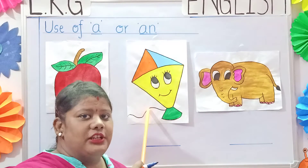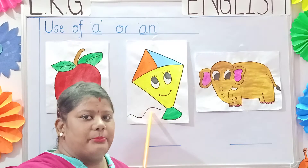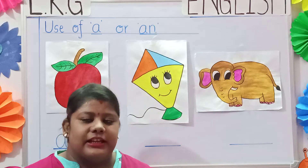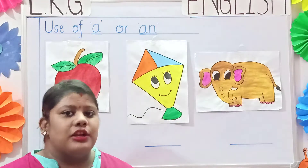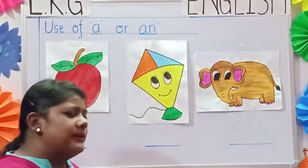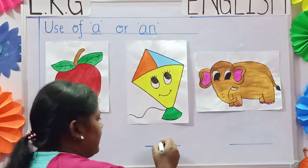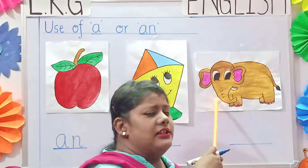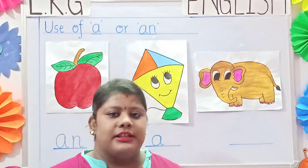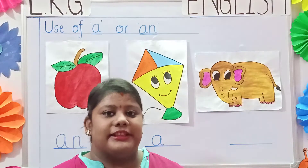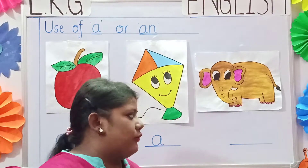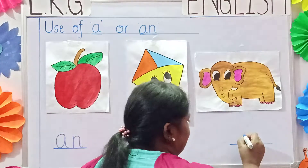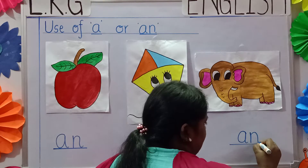Now see the next picture. What is it? It is a picture of a kite. Kite starts with the letter K, so K is a consonant, and we will write 'a' — a kite. Now see the next picture. It is a picture of an elephant. Elephant starts with the letter E, so we will write 'an' — A, N — an.